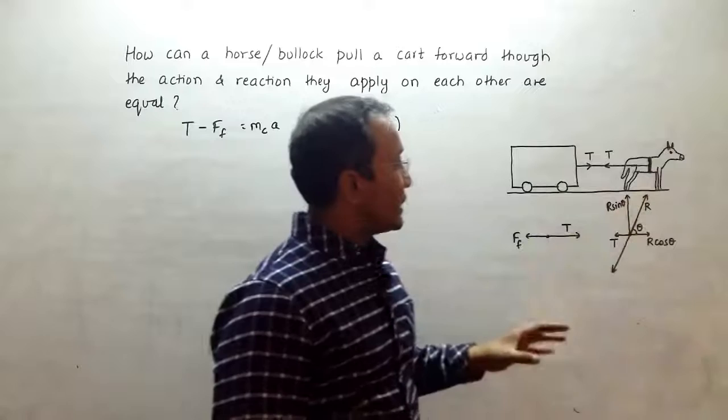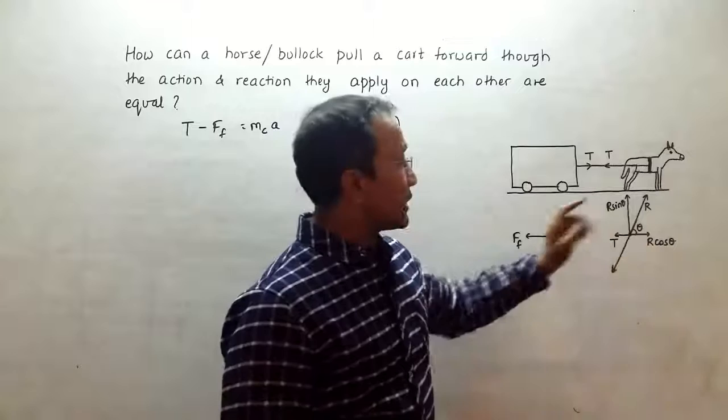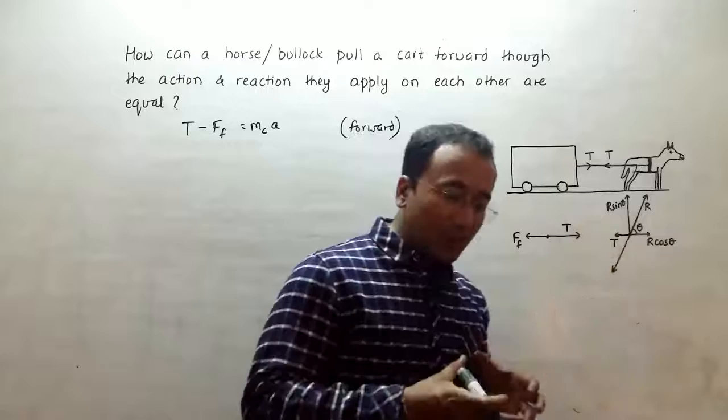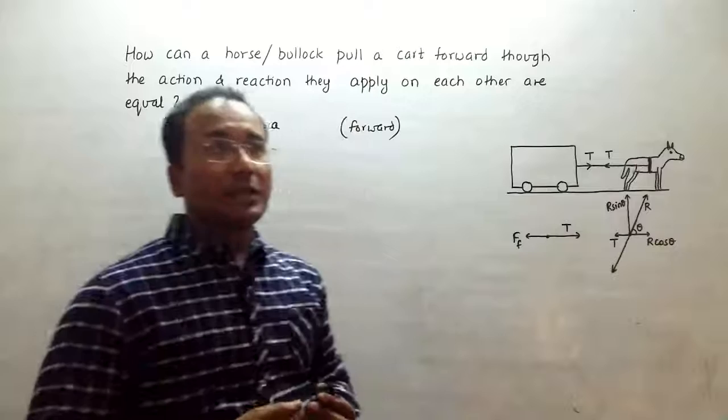Since it is slanted, it will have its horizontal and vertical components. If the angle theta is the angle with the horizontal, the horizontal component is R cos theta and the vertical is R sin theta. So this R cos theta will interact with T. Now, the job of the horse is to make R cos theta more than this T.